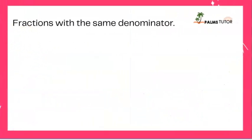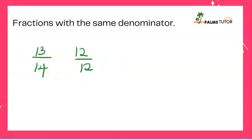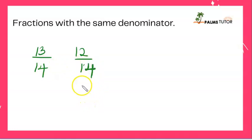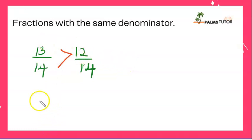Another example: we have 13 over 14 and 12 over 14. Since they have the same denominator, which one is bigger? This person has 13 out of 14 and this person has 12 out of 14. So this fraction, 13 over 14, is bigger than 12 over 14.